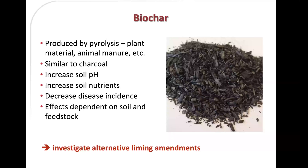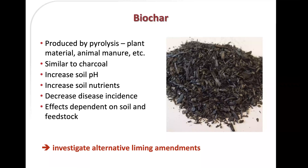The other product we were interested in was biochar. Biochar is essentially plant material or animal manure that's been subjected to pyrolysis — exposed to very high temperature in the absence of oxygen. It resembles charcoal in appearance, and has been reported to increase soil pH, improve fertility, and decrease disease incidence. Its effects depend on the feedstock and the conditions under which it's produced. The goal of our studies was to look at these alternative liming amendments to see what effect they would have.